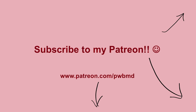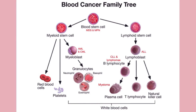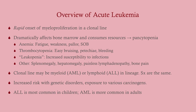This is the blood cancer family tree. When you're dealing with mutations and proliferations of early cell lines — cells early in their development — that's where you tend to deal with acute leukemias. If it's a mutation more downstream, you tend to be dealing with chronic leukemias and things like multiple myeloma. This is just an overview of acute leukemia.